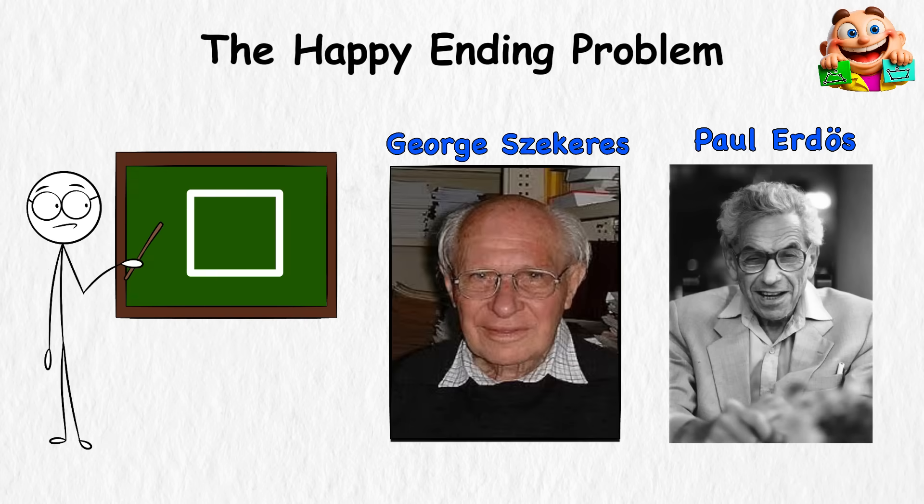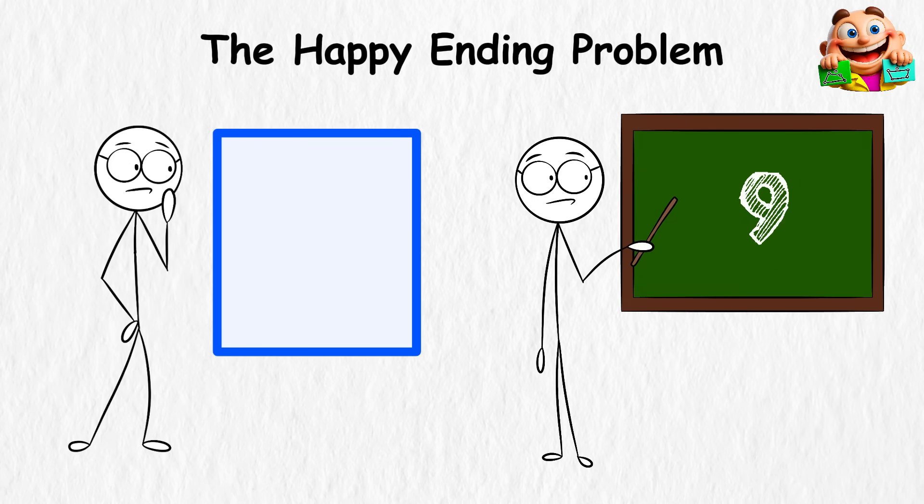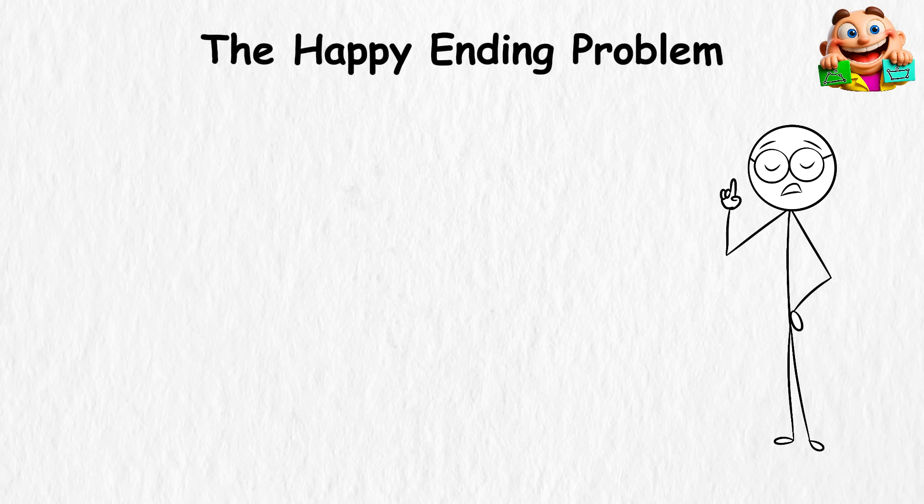Her friends, Paul Erdos and George Szekeres, pushed the idea further. What if you want a bigger polygon? With six points, you're guaranteed a triangle. With nine points, you can form a convex hexagon. Keep adding points, and sooner or later, you're forced to see order appear out of chaos.